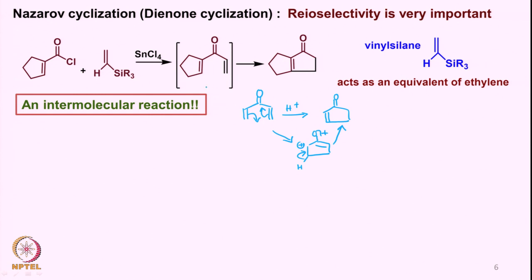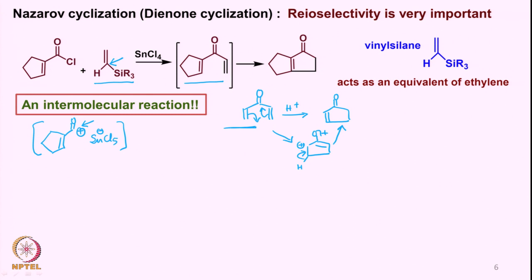How do you make this dienone? You can react an acyl chloride with a vinylsilane. As discussed, the vinylsilane reacts with an electrophile — in this case the electrophile is this positively charged species and you have SnCl4. The vinylsilane reacts such that the carbon-silicon bond is replaced by the electrophile, so this carbon gets attached to this electrophilic part and we get this intermediate.